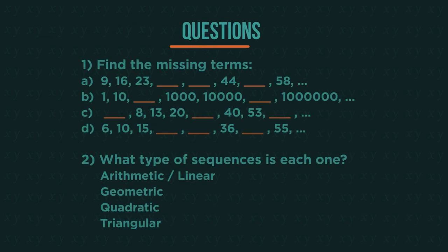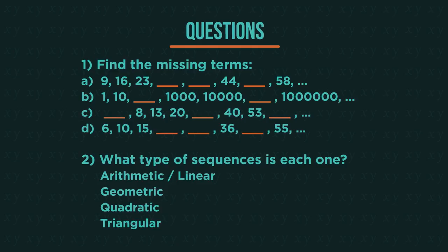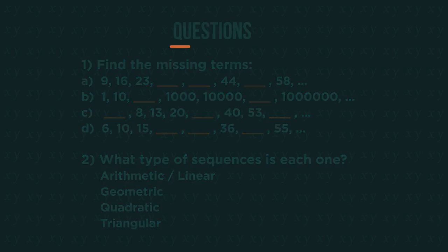Here are some sequences. Find the missing terms of each sequence and then label what type of sequence it is. Pause the video, answer the questions and click play when you're ready. How did you get on?